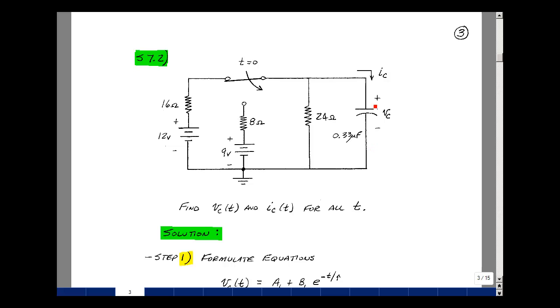Given this one capacitor circuit with a single pole double throw switch, can you find the voltage across and the current through the capacitor? In the Chapter 7 notes, we had an algorithm for solving one capacitor circuits, so let's use that.